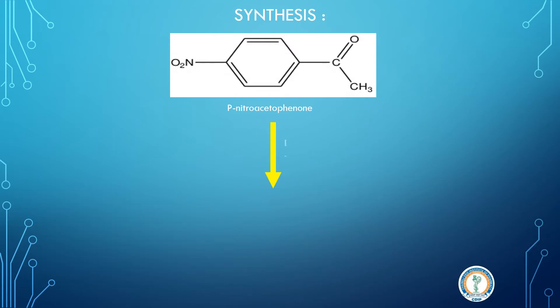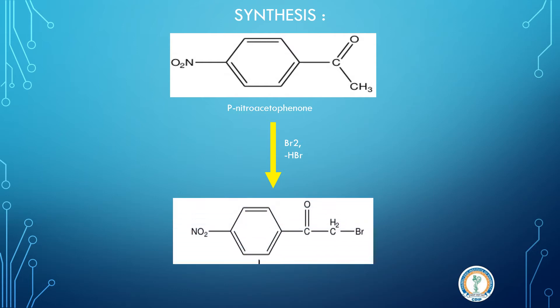Now further we have to do bromination, meaning reaction with bromine. Here one molecule of hydrogen will be removed by one bromine molecule in the form of HBr, and one bromine will be added on CH3. So we will get a new intermediate, a bromine derivative.